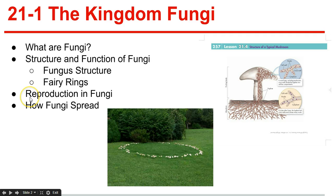Reproduction in fungi: most fungi reproduce both asexually and sexually. Asexual reproduction includes when hyphae break off and begin to grow on their own, or when spores are produced and then scatter. Sexual reproduction usually involves two different mating types, a positive and a negative type. When hyphae of opposite types meet, they fuse together, bringing the two nuclei together in the same cell, forming a diploid zygote nucleus, which then enters meiosis.